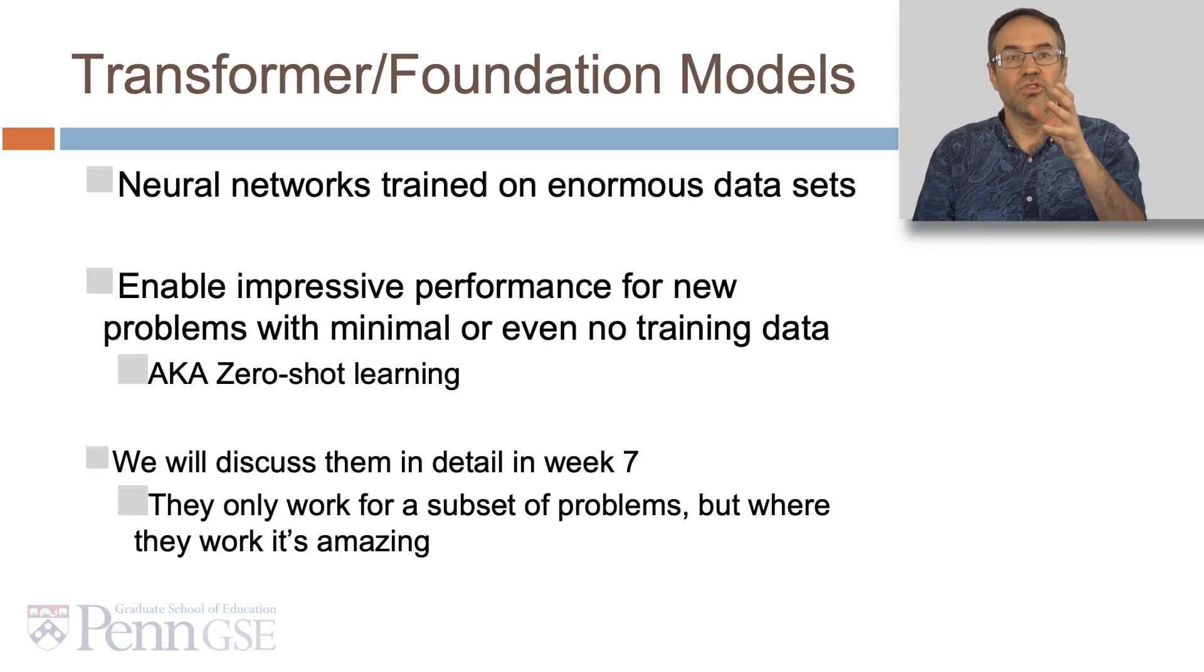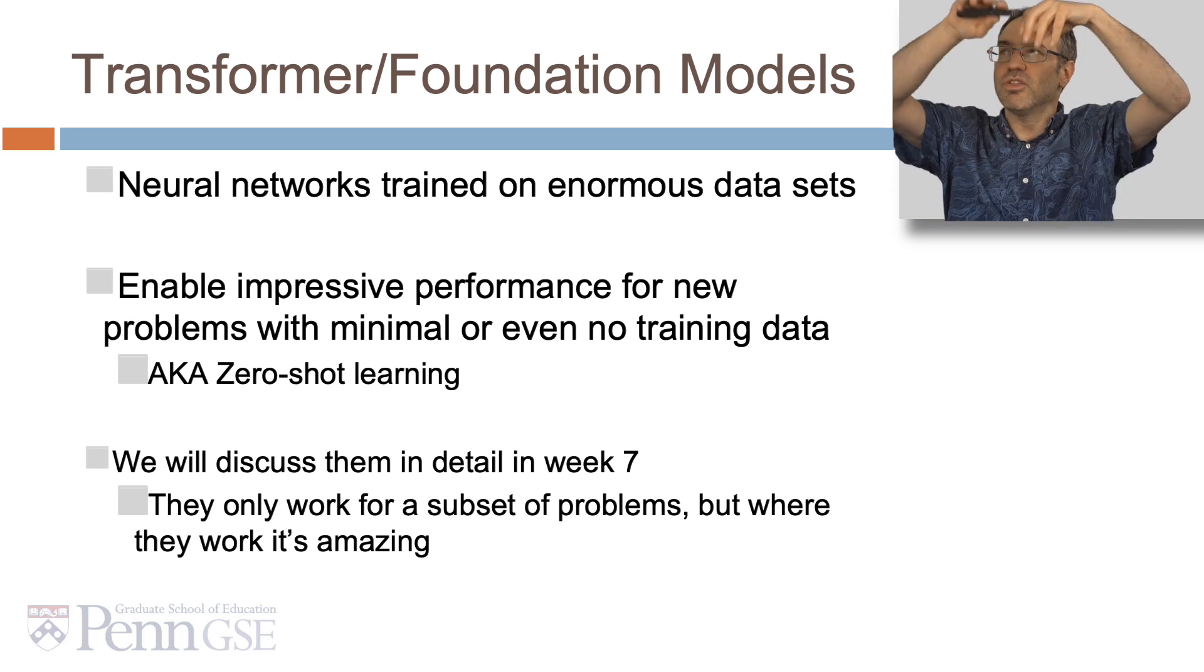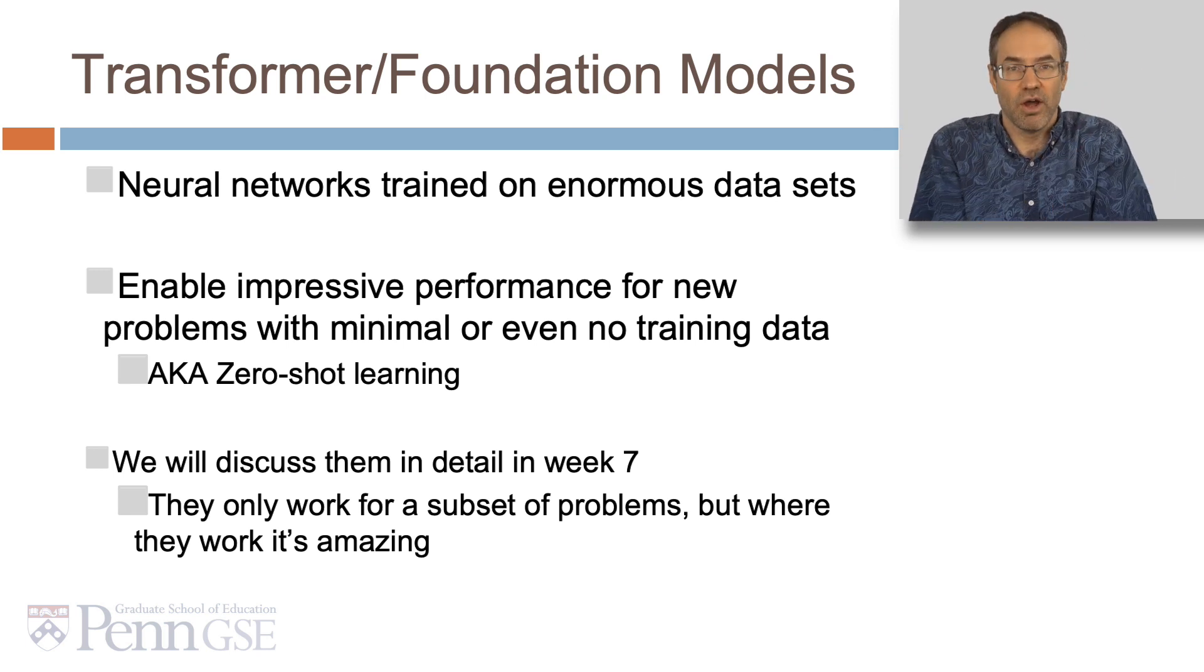These are created using neural networks trained on enormous data sets. They enable impressive performance for new problems with minimal or even no training data for the specific problem, just by using the sheer volume of previous things that have been seen by the algorithm. This is also called zero-shot learning. We're going to discuss Transformers/Foundation models in detail in week seven. They only work for a subset of problems, but where they work, it's amazing.